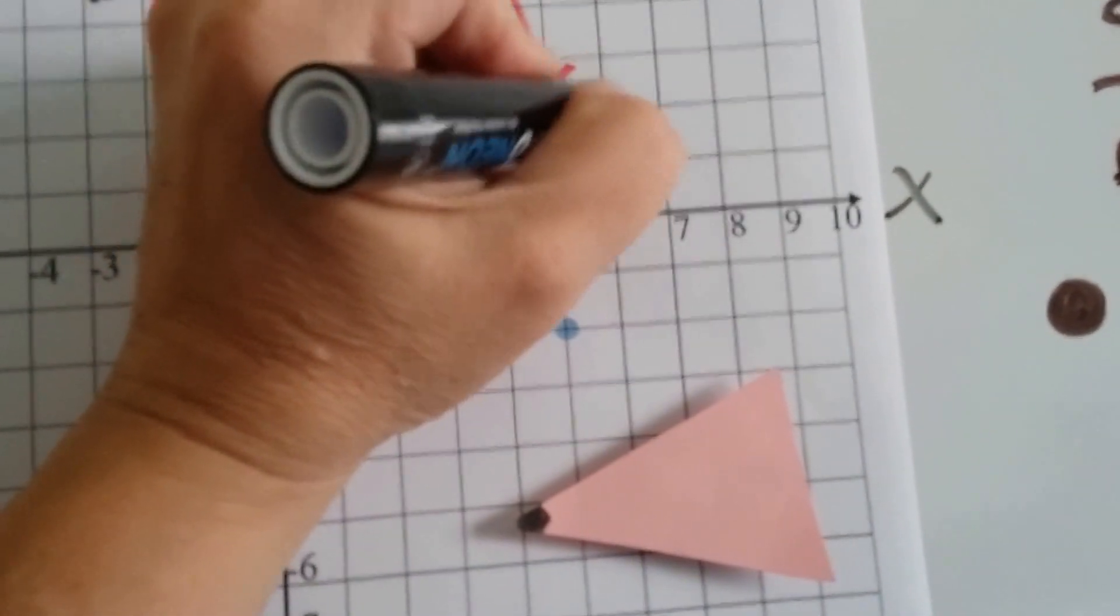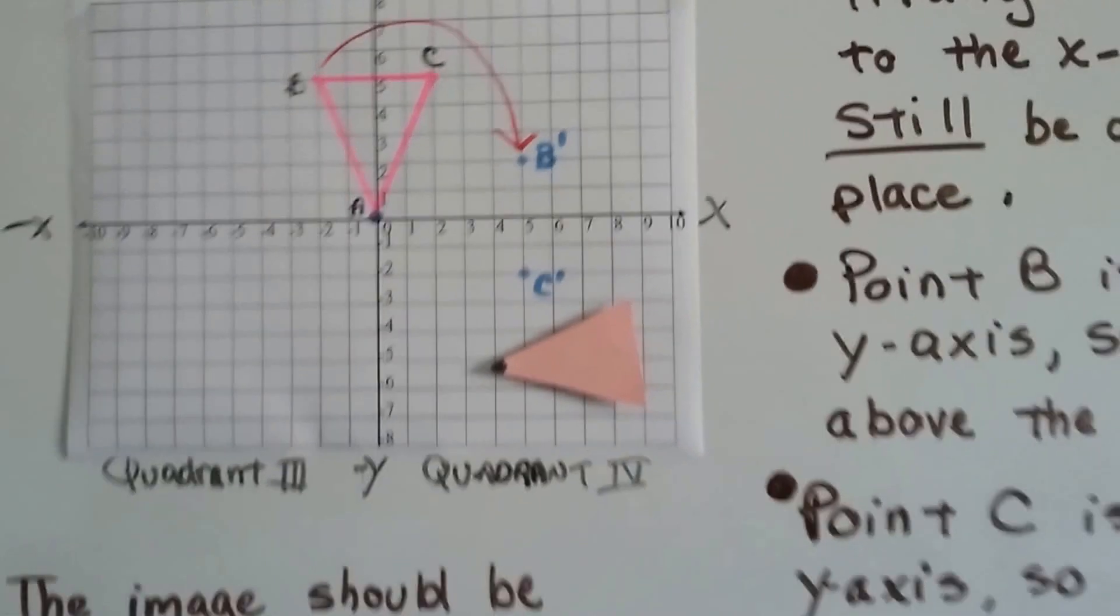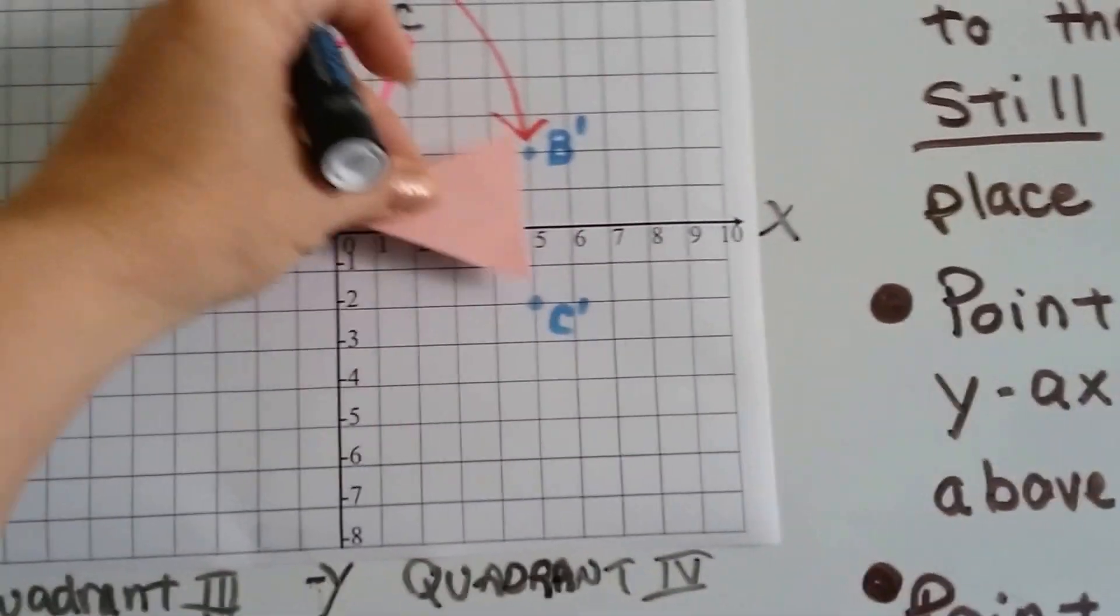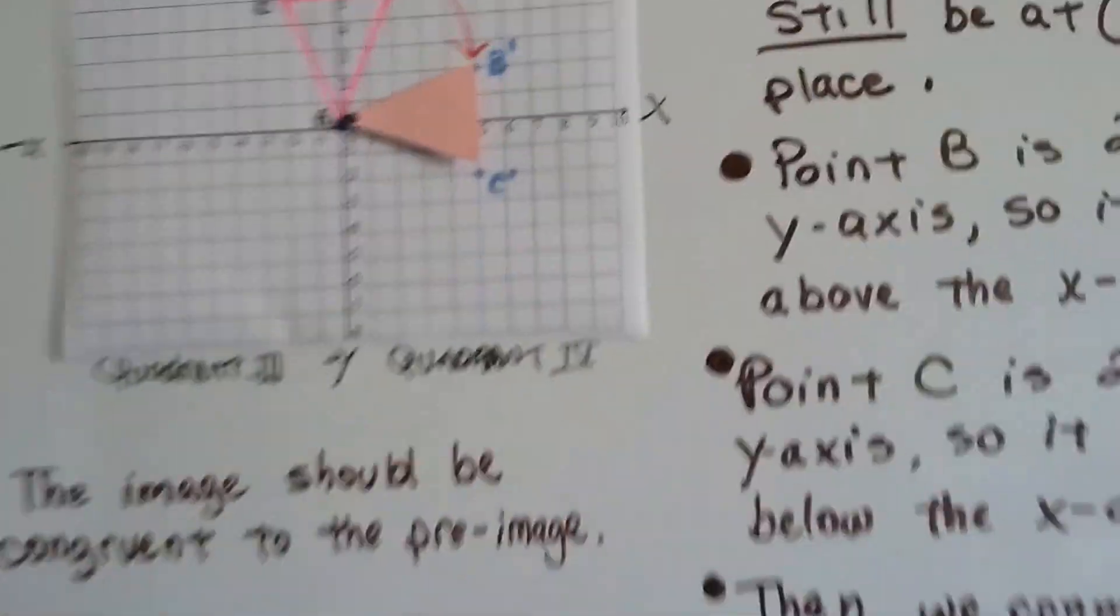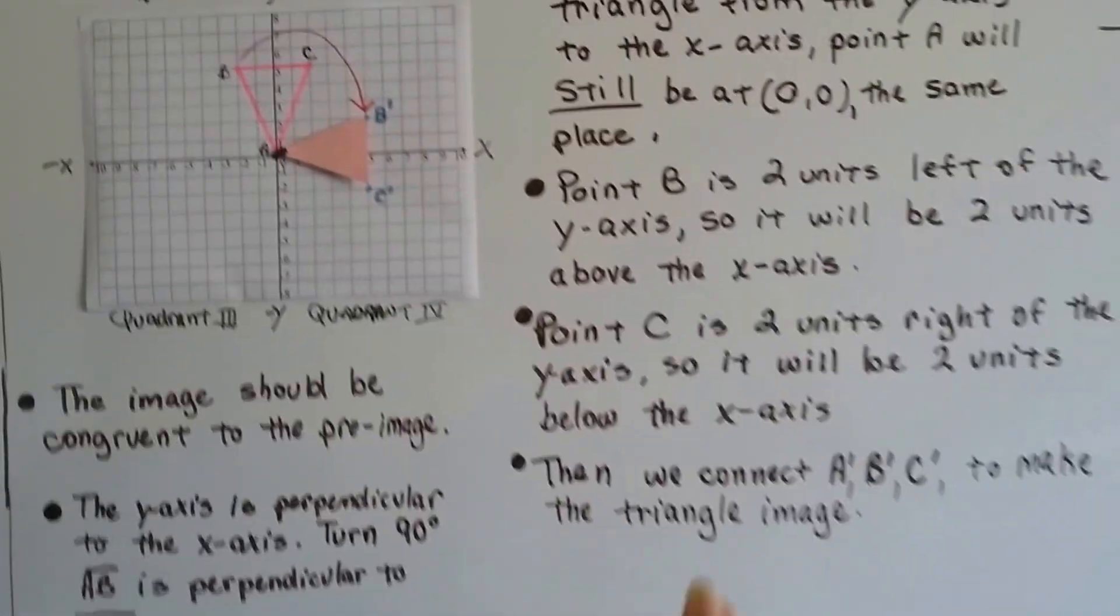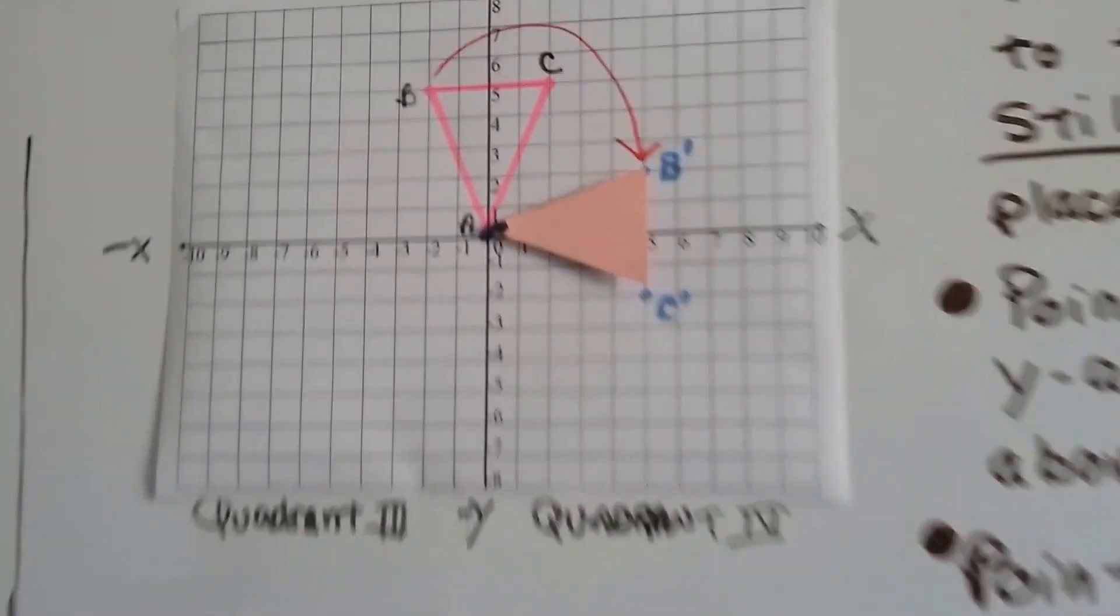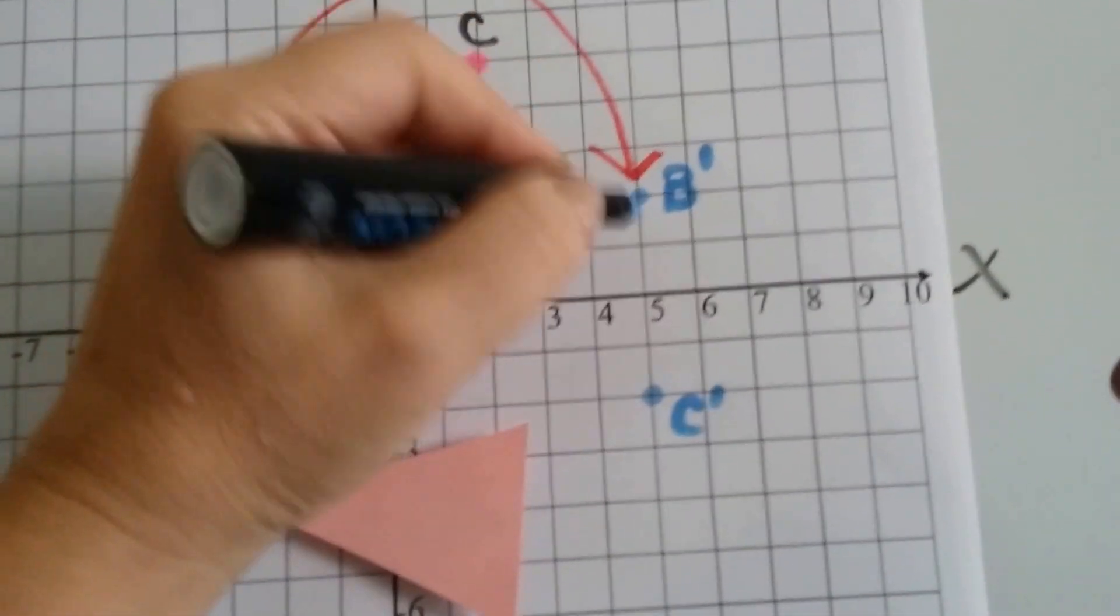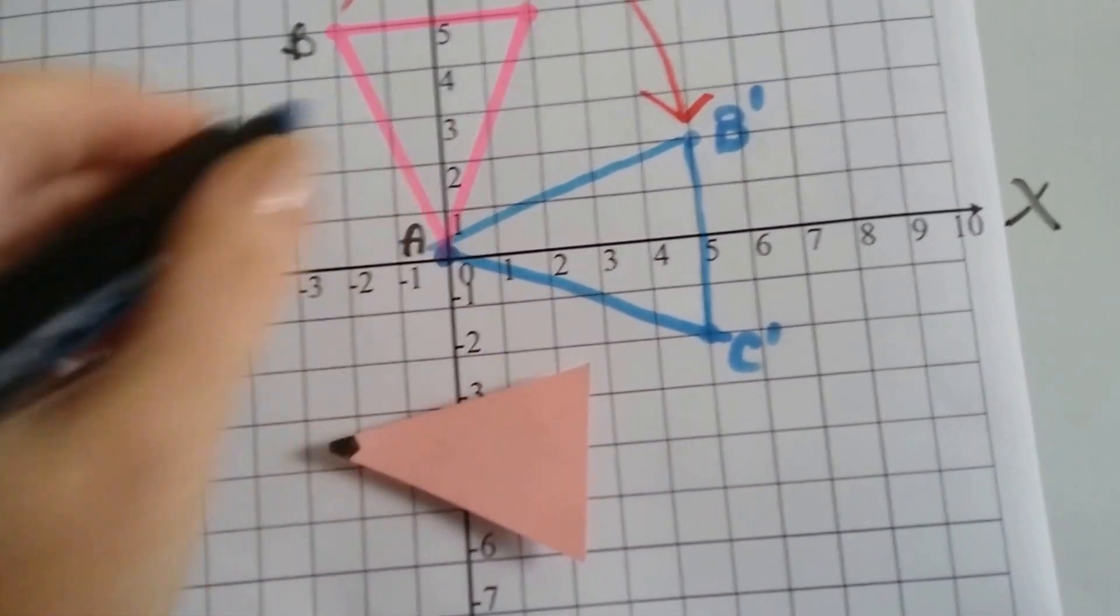So, this is B prime for the image and C prime for the image. And then this is where our triangle will sit. It will sit right like this. All we have to do now is connect A prime, B prime, and C prime to make the triangle image. We just connect the lines.